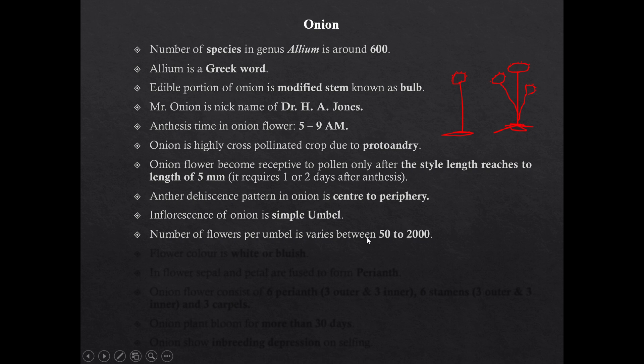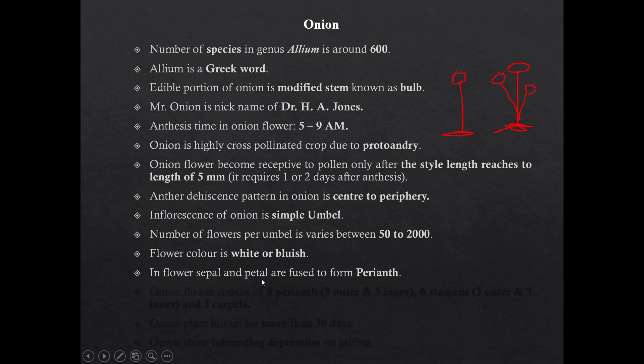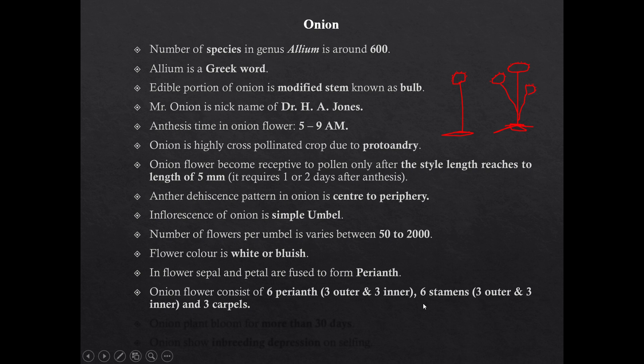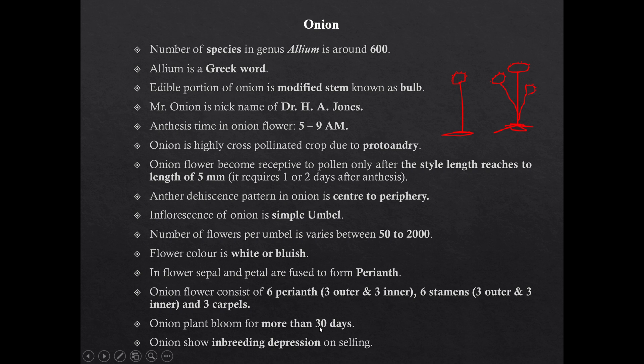Number of flowers per umbel in onion varies between 50 to 2000. Flower color in onion is white or bluish. In onion flowers, sepal and petal are fused to form perianth. Onion flower consists of 6 perianth, 6 stamens, and 3 carpels. Onion plant blooms for more than 30 days.